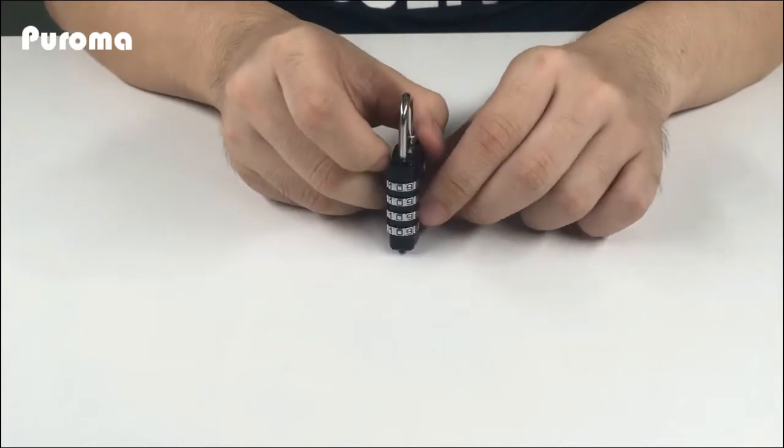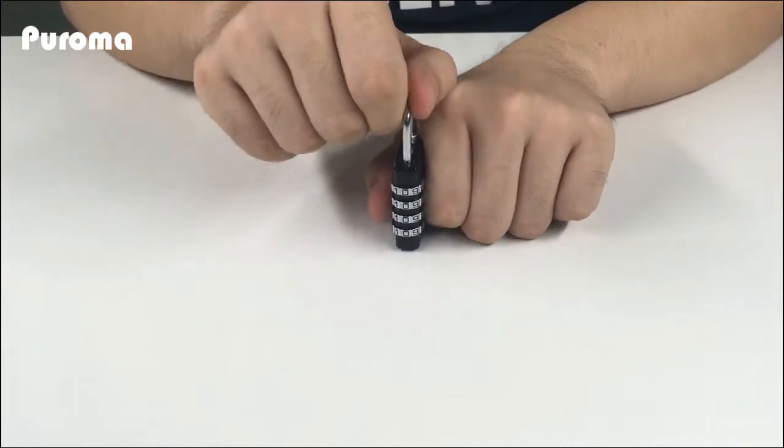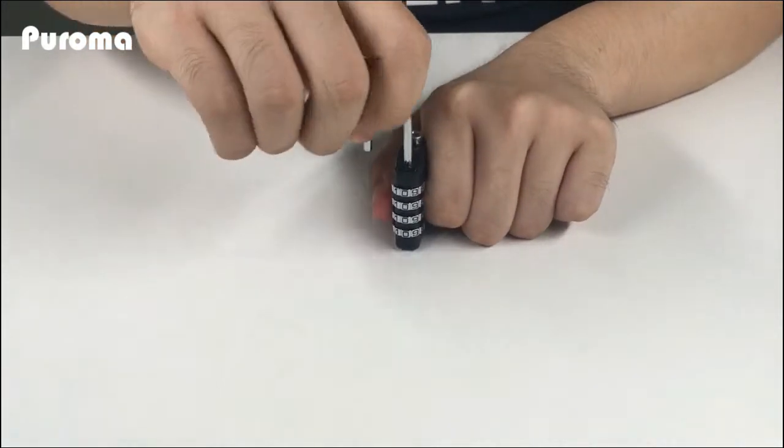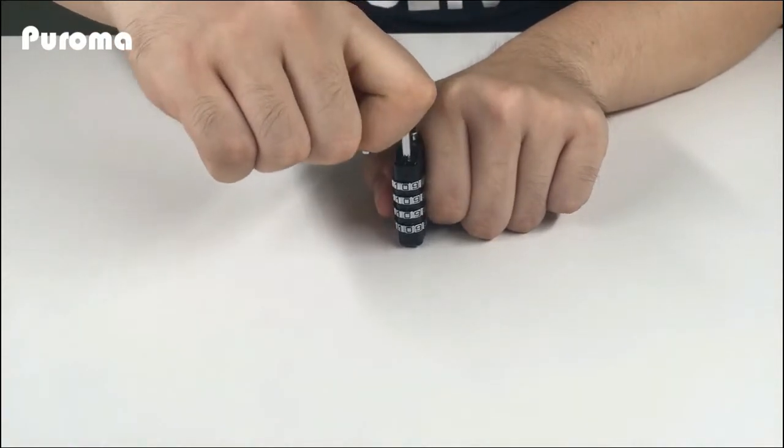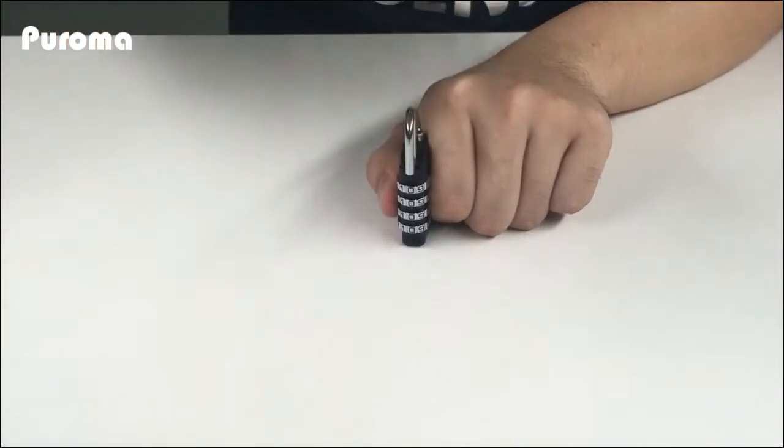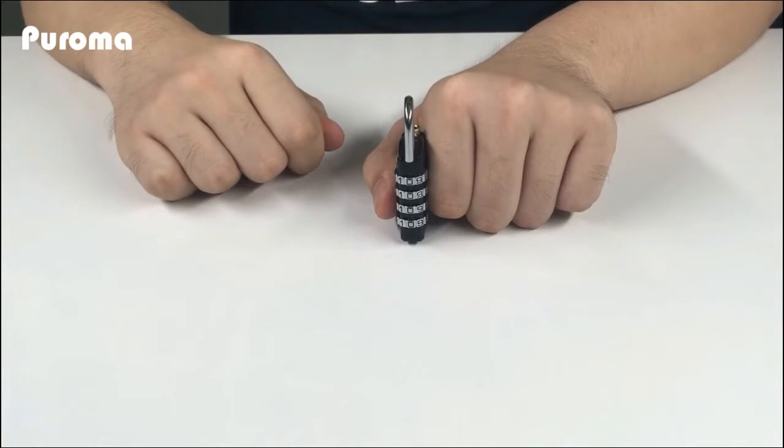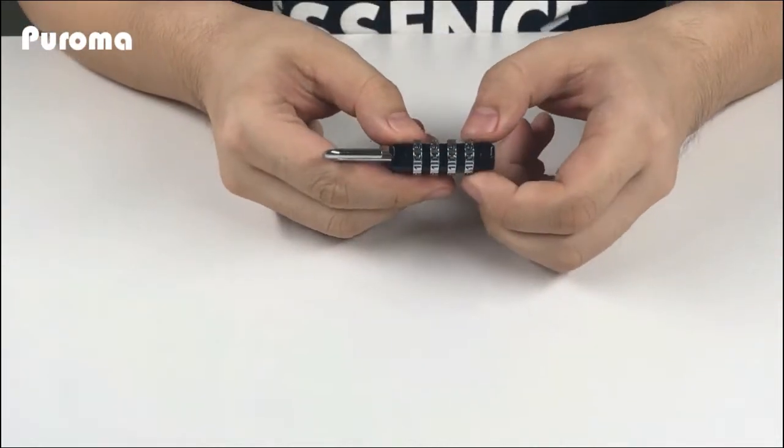Pull out the shackle, rotate it anticlockwise 90 degrees to the setting gap. Push the shackle down, keep it there, and rotate it anticlockwise another 90 degrees so it can stay down without being moved.